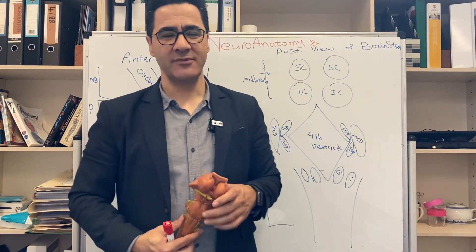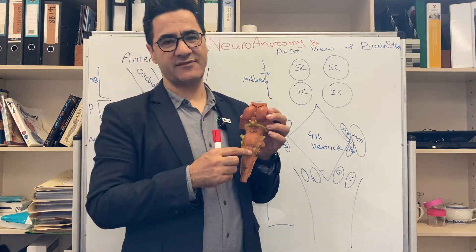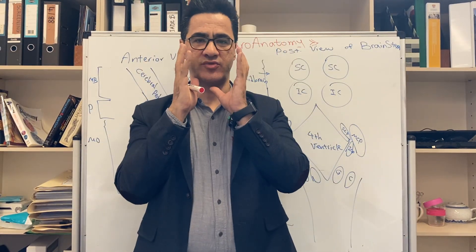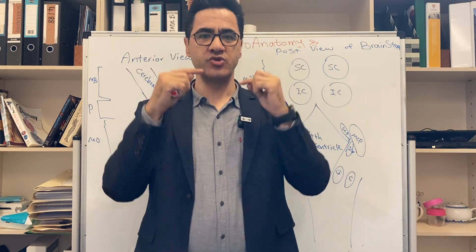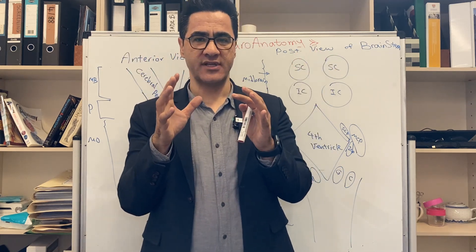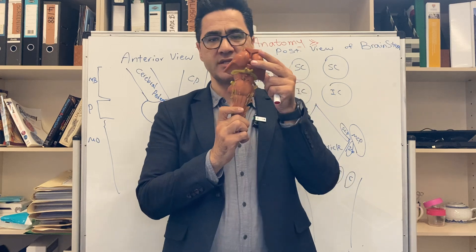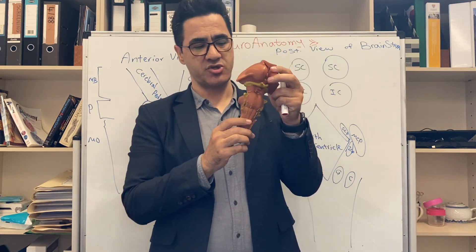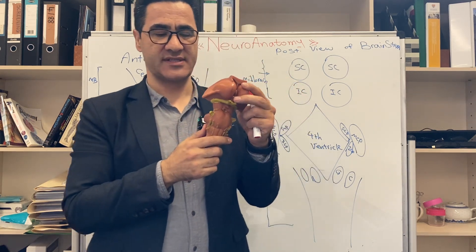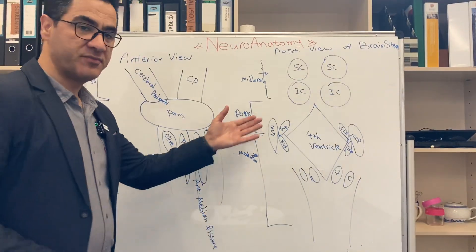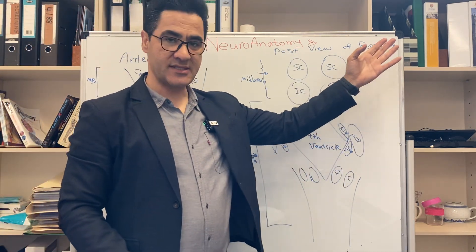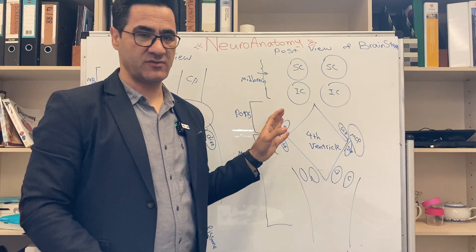Hi everybody. I'm going to show you the cranial nerves. We have 12 pairs of cranial nerves, numbered from 1 to 12. Ten out of 12 cranial nerves come out of the brain stem. In my previous video I showed you the external features of the brain stem, and now I'm going to focus on the cranial nerves. Please watch that video before watching this one.